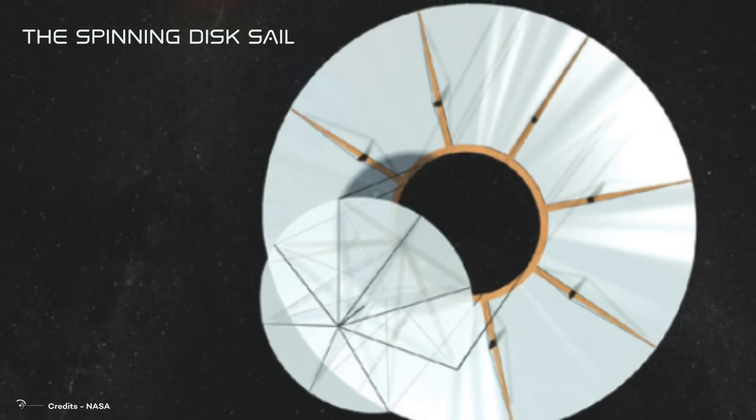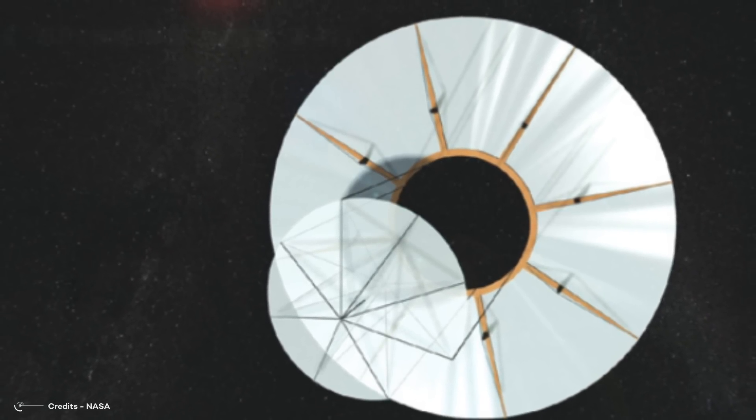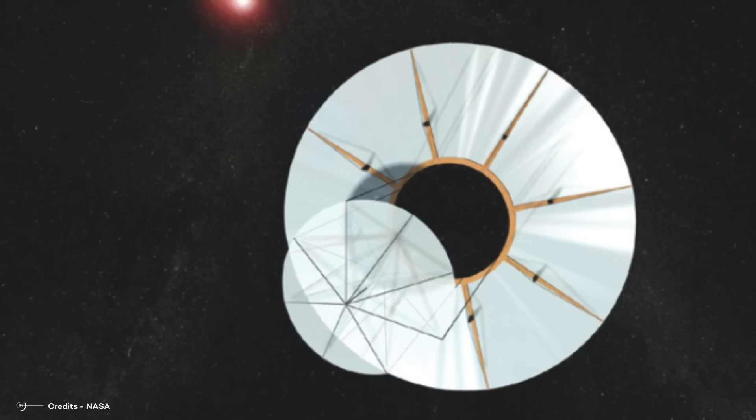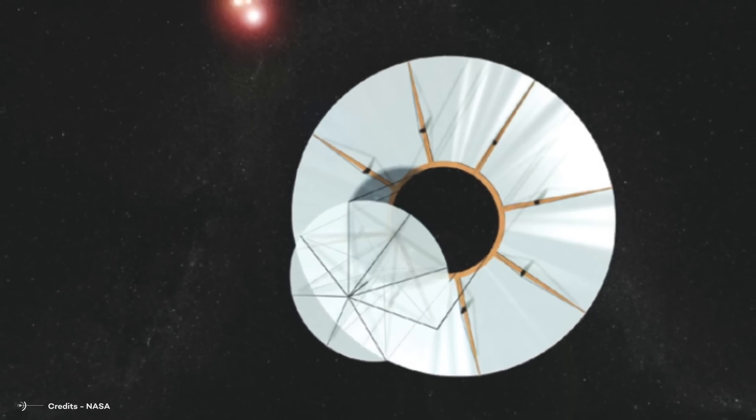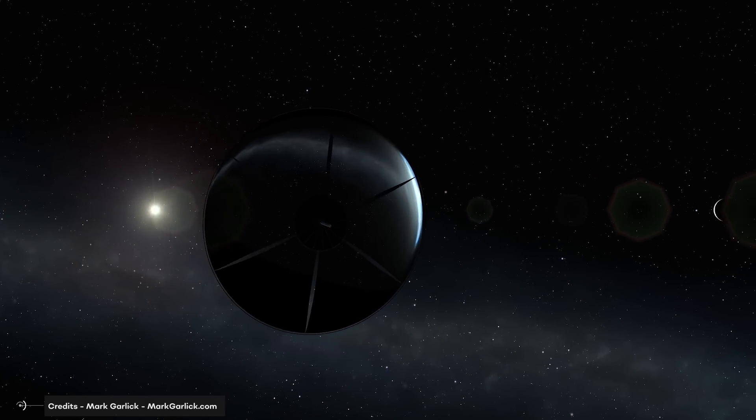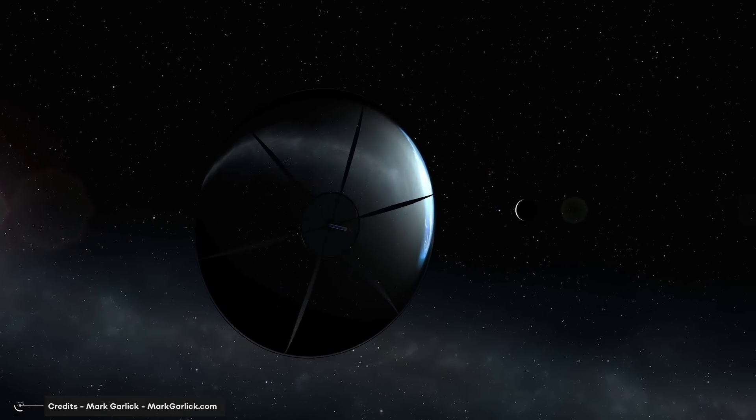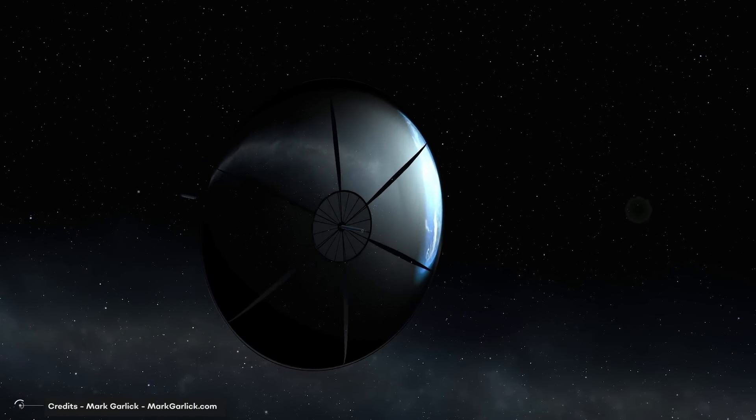The spinning disk sail has a number of advantages. This configuration also uses rotation as a means of tension across the film, similar to the heliogyro, though the spinning disk has a continuous sail film. A distinctive feature of the spinning disk is that it can also passively deploy by using rotation.